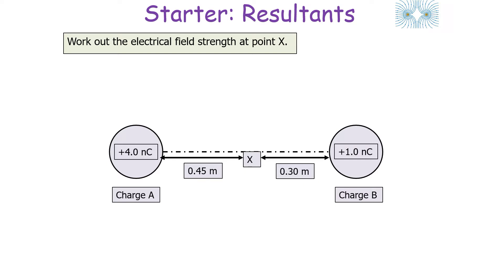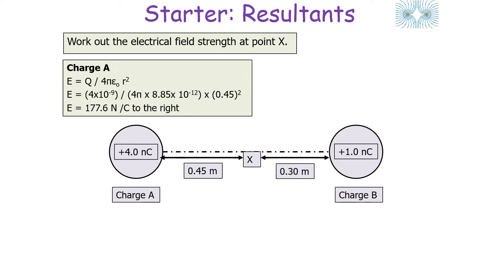A question could say: work out the electrical field strength at point X when charge A has a charge of +4 nanocoulombs and is 0.45 metres from point X, and charge B has a charge of +1 nanocoulomb and is 0.30 metres from point X. First, work out the electrical field strength at point X due to charge A using E = Q / (4πε₀r²). Substituting 4×10⁻⁹ for Q and 0.45 for r gives an electrical field strength of 177.6 N/C to the right.